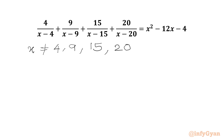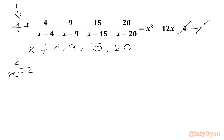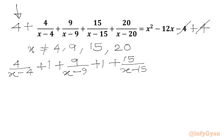Now we are going to add 4 to both sides — in RHS also we will write plus 4. So minus 4 plus 4 will cancel. Now we are going to split this 4 as 1 plus 1 plus 1 plus 1. So we can write: 4/(X−4) + 1 + 9/(X−9) + 1 + 15/(X−15) + 1 + 20/(X−20) + 1, and in RHS we will write X² minus 12X.